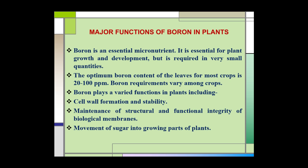Boron is an essential micronutrient. It is essential for plant growth and development but is required in very small quantities. The optimum boron content of the leaves for most crops is 20–200 ppm, but the requirement of boron varies among crops.